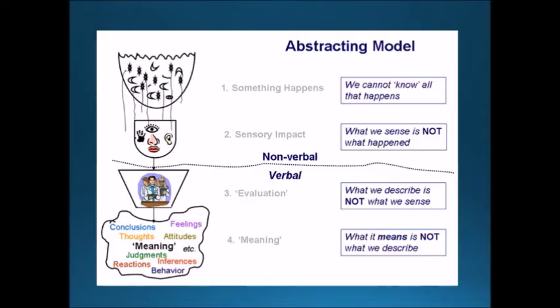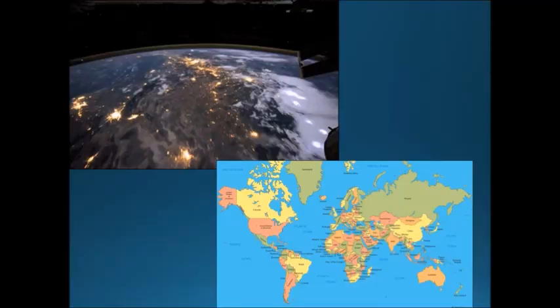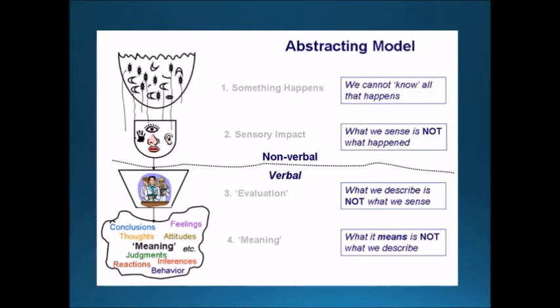The next level is evaluation. We have the sensory impact and then we feel about it. If the sensory impact is a hammer to your toe, the evaluation isn't even really thinking yet — it's just the immediate feeling from seeing or experiencing something. But the point is this is another abstraction; what we describe to ourselves in our evaluation is not what we sensed. This is another level of abstraction.